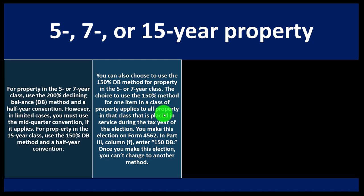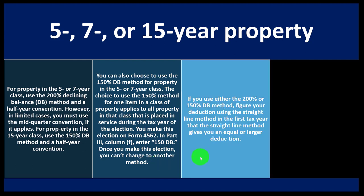The choice to use the 150% method for one item in a class of property applies to all property in that class placed in service during the tax year of the election — you can't pick and choose. You make this election on Form 4562, Part Three, Column F, entering 150 DB. Once you make this election, you can't change to another method — you're locked in.